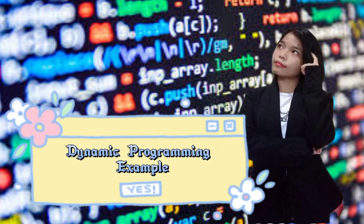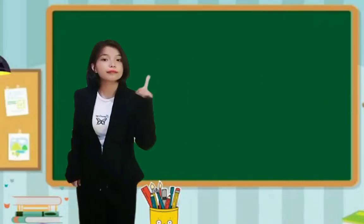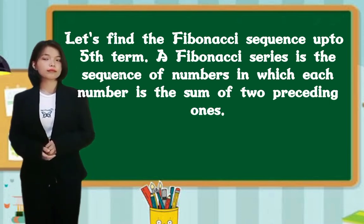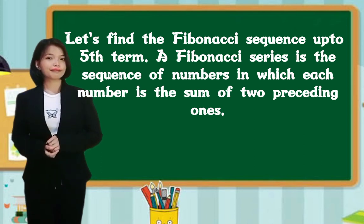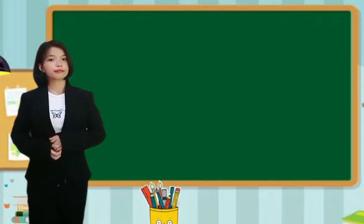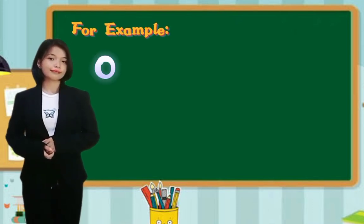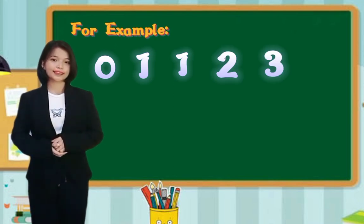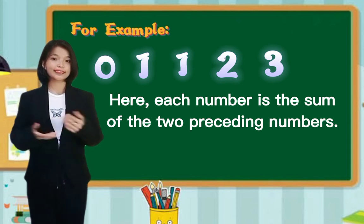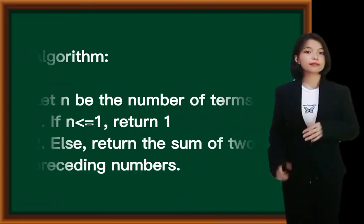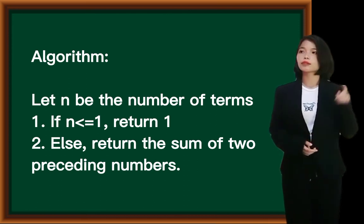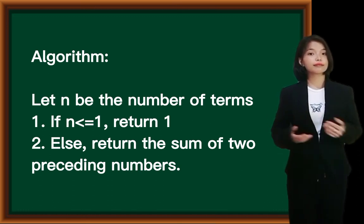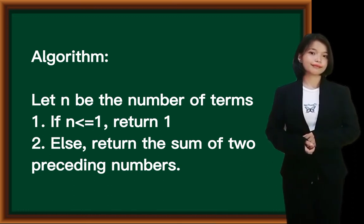Dynamic programming example. Let's find the Fibonacci sequence up to the fifth term. A Fibonacci series is the sequence of numbers in which each number is the sum of the two preceding ones. For example, 0, 1, 1, 2, 3. Here, each number is the sum of the two preceding numbers. So, the algorithm will be: let n be the number of terms. If n is less than or equal to 1, return 1. Else, return the sum of two preceding numbers.